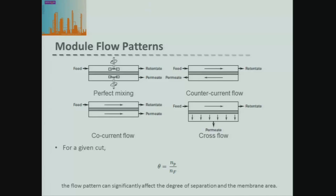The final case is cross flow, where as your feed passes to your retentate, you're drawing off the permeate concentration at each step as you move along. For a given cut — the ratio of permeate flow to feed flow — these flow patterns significantly affect the actual separation achievable, and therefore the required membrane area. There will be an optimum membrane design for a particular system.